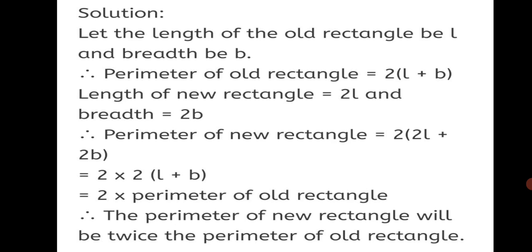Solution: Let the length of the original rectangle be L and breadth be B. The length of the new rectangle is doubled, so it becomes 2L, and the breadth becomes 2B. Therefore, the perimeter of the new rectangle equals 2(2L + 2B), which equals 2 times (2L + 2B). That simplifies to 2 times 2(L + B), which equals 2 times the perimeter of the old rectangle. Therefore, the perimeter of the new rectangle will be twice the perimeter of the old rectangle.